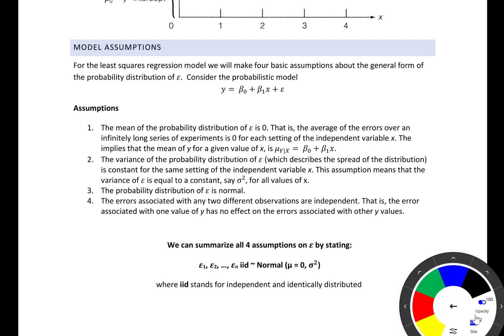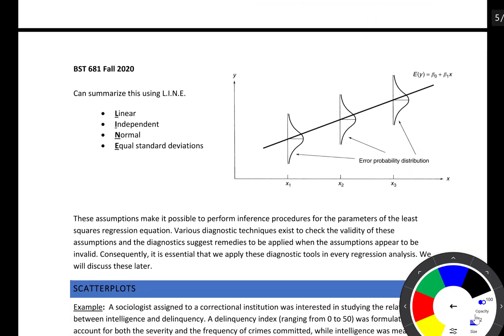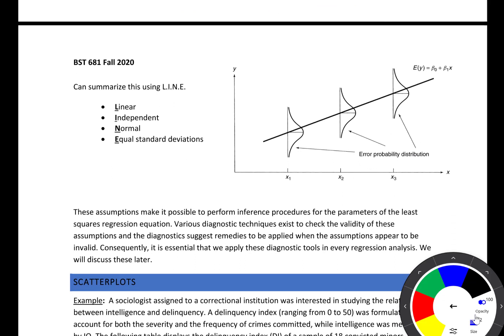Most assumptions in regression are about that random piece, epsilon. The four assumptions are: (1) the mean of the probability distribution of epsilon is zero — the average of all errors over an infinitely long series of experiments equals zero; (2) the variance of epsilon is constant for the same settings of the independent variable x — similar variability in y across different levels of x; (3) the probability distribution of epsilon is normal; and (4) the errors associated with any two different observations are independent. These are summarized using the acronym LINE: Linear, Independent, Normal, and Equal standard deviations.